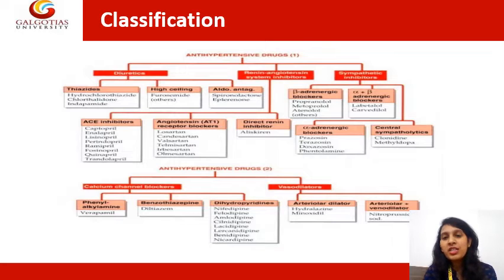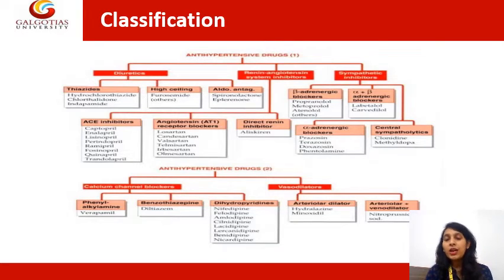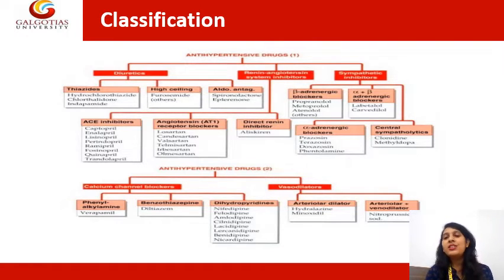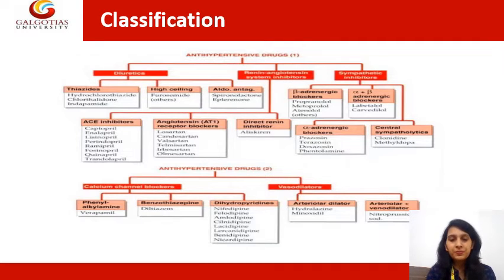To revise: the four subcategories of sympathetic inhibitors are — first, beta-adrenergic blockers; second, alpha-plus-beta adrenergic blockers; third, alpha-adrenergic blockers including prazosin, terazosin, doxazosin, and phentolamine; and fourth, central sympatholytic drugs, which are clonidine and methyldopa.